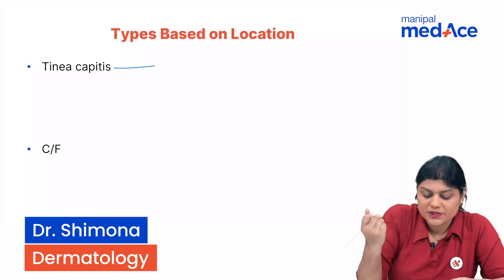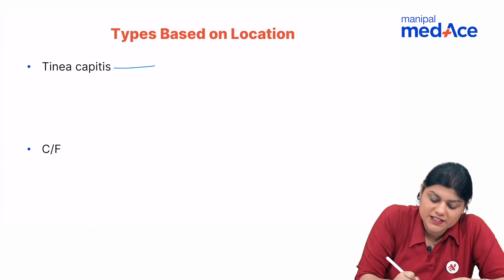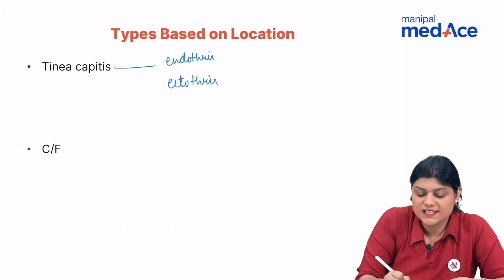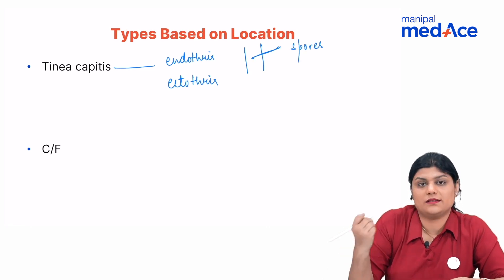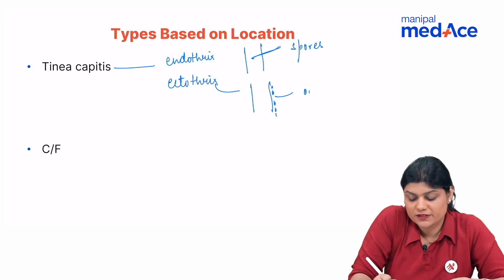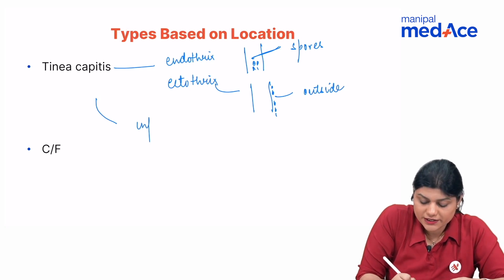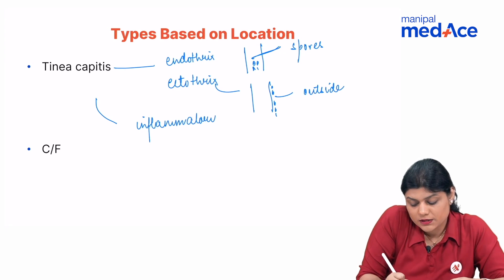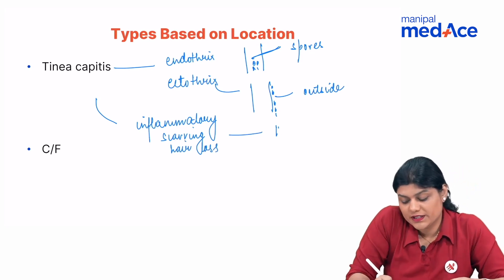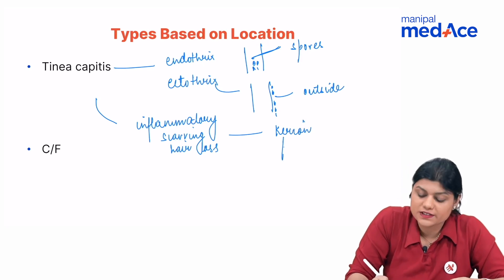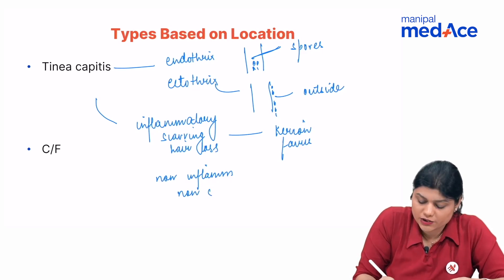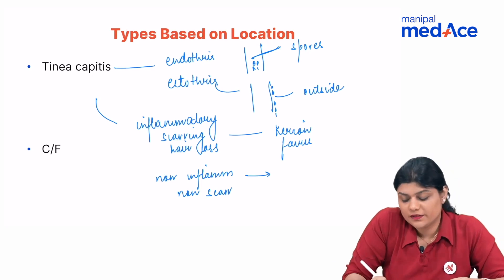Tinea capitis is tinea of the scalp hair. It can be endothrix or ectothrix — endo means inside, so spores are present inside the hair shaft; ecto means outside, so spores are present outside the hair shaft. It can be inflammatory, in which we have cicatricial scarring hair loss.